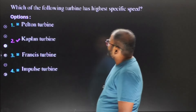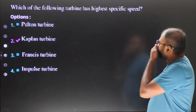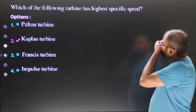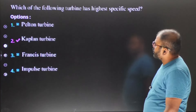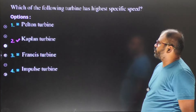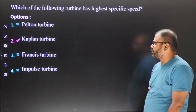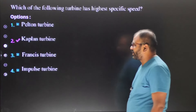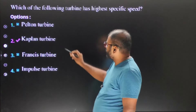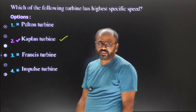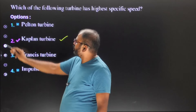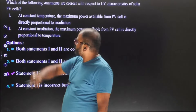Question fourteen is a direct question: which turbine is used for highest speed? The answer is the Kaplan turbine, used for highest speed operation. This is a direct question from the generation topic.